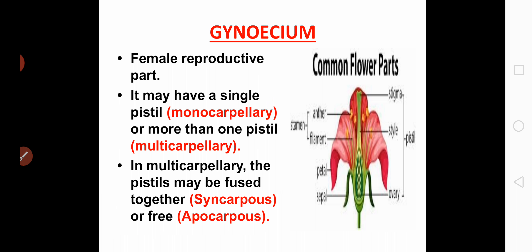The pistil, which is also called as gynoecium, is the female reproductive organ of the flower. If a flower contains only one pistil, then the condition is called as monocarpillary. If more than one pistil is present, the condition is called as multicarpillary.